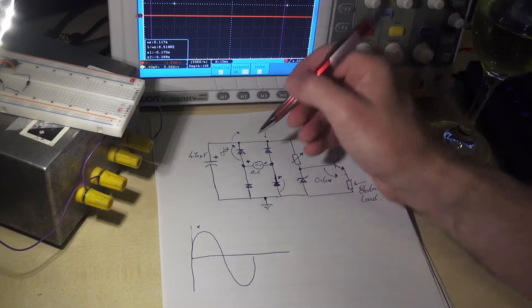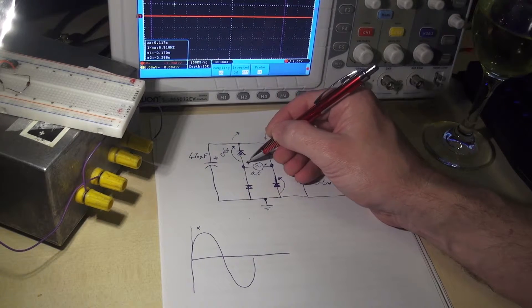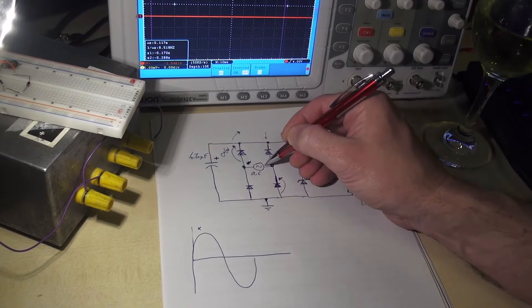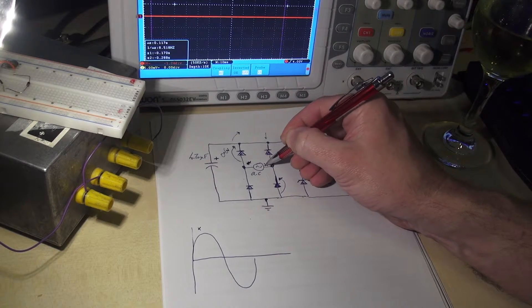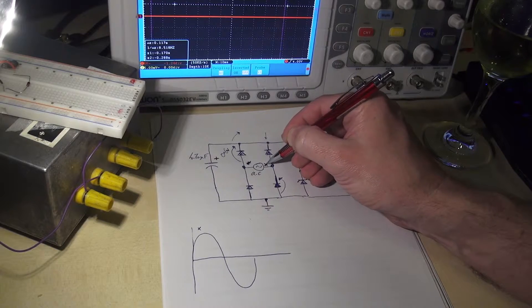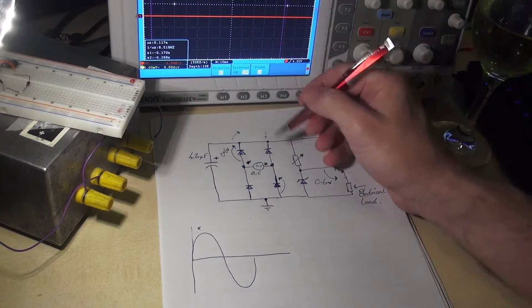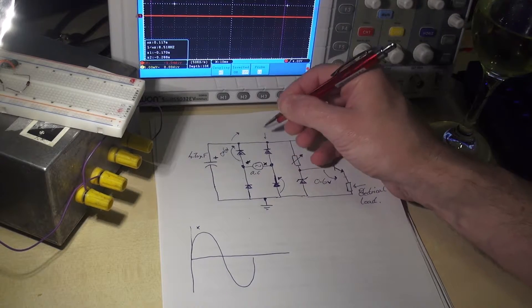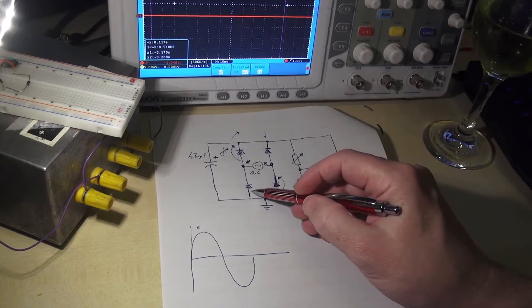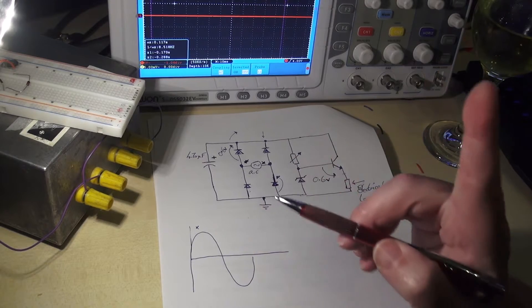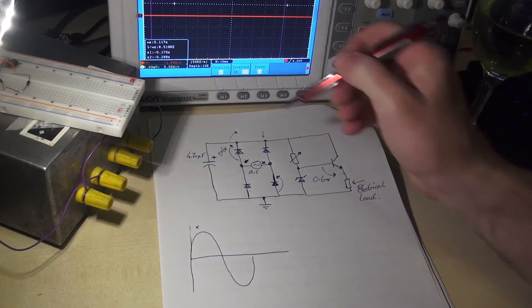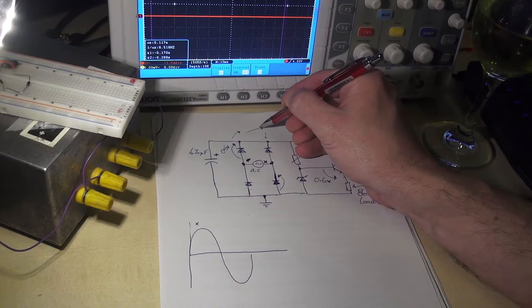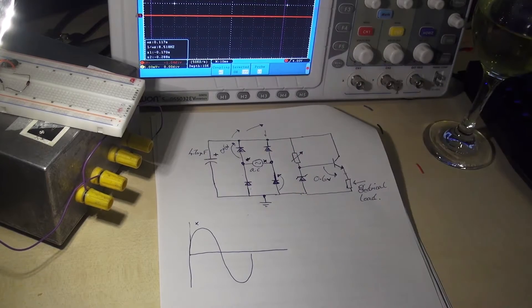For the other 50% of the time, the polarities swap over. So this terminal becomes negative, and this terminal becomes positive. This time, the top right diode will conduct and the bottom left diode will conduct.